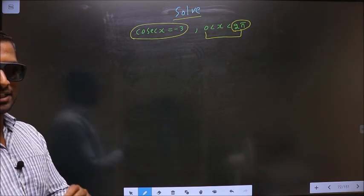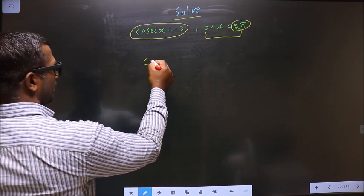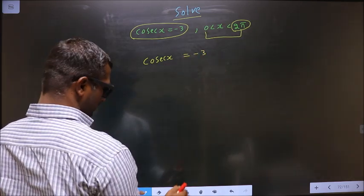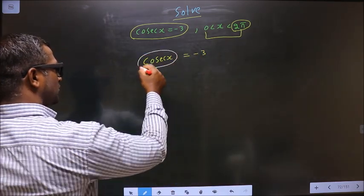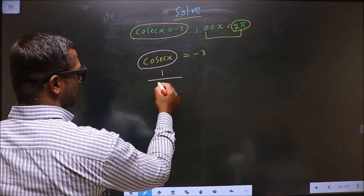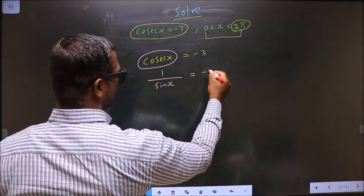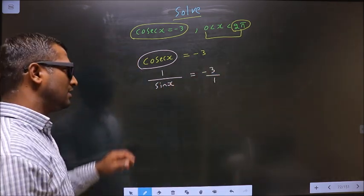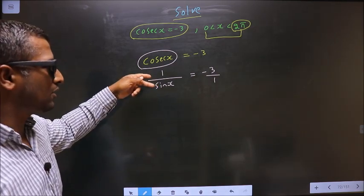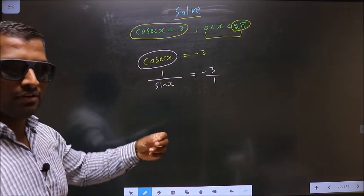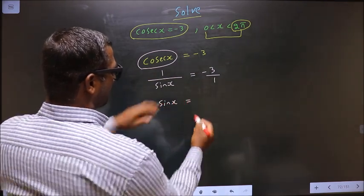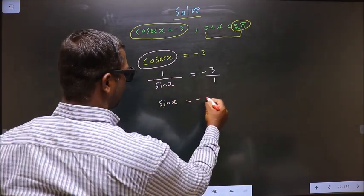Now given equation is cosecant x equal to minus 3. Now you change this cosecant to sin. So cosecant x is nothing but 1 by sin x equal to minus 3. Now sin should be the subject. For that I should do reciprocal on both sides. When we do the reciprocal I get sin x equal to minus 1 by 3.